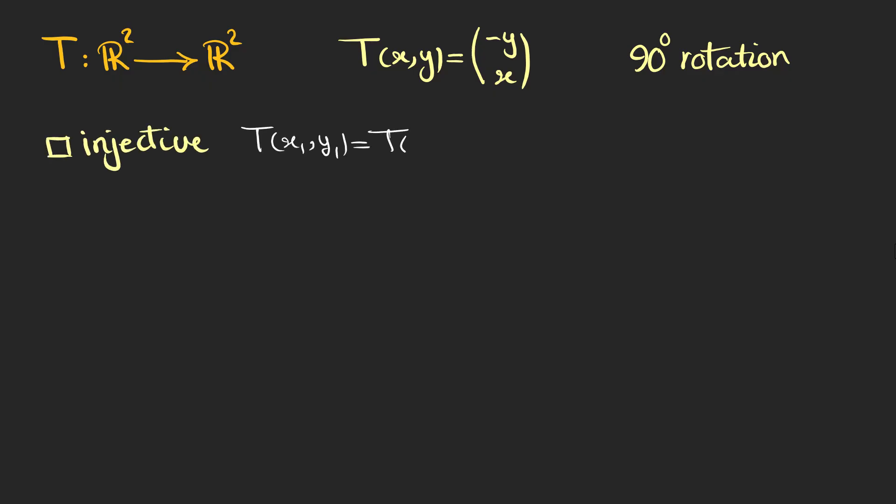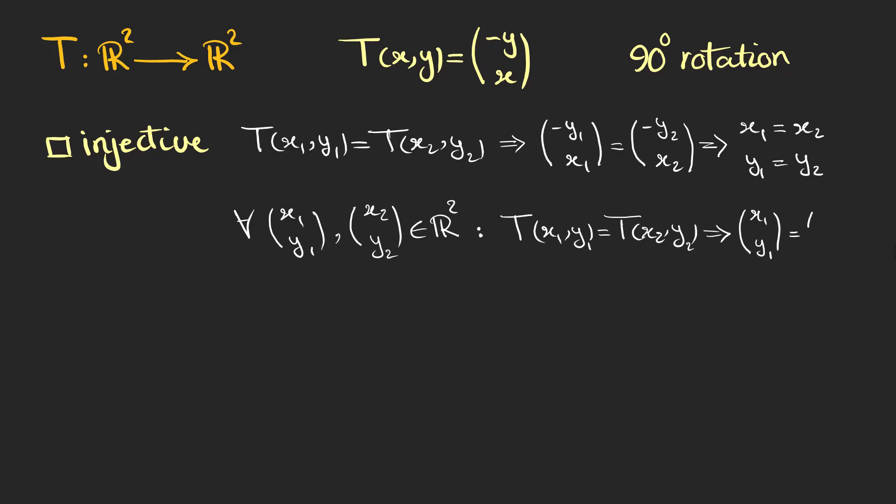To check if it is injective, we can take two different vectors and rotate them, and for being injective we expect them to be the same if their rotation is the same. Based on the last term, we can conclude that for every two vectors, if we rotate them and get the same result, the two vectors are the same vector and not different ones. So this transformation is injective.